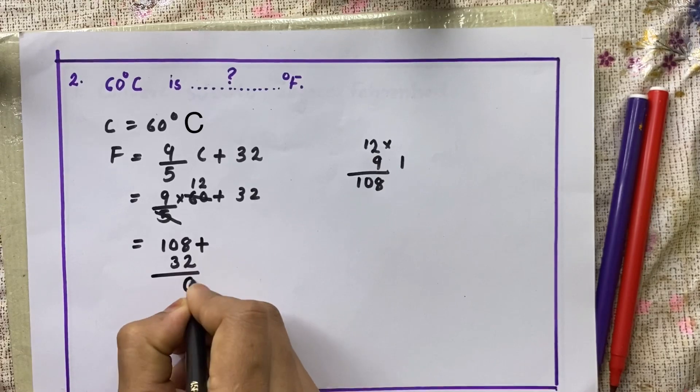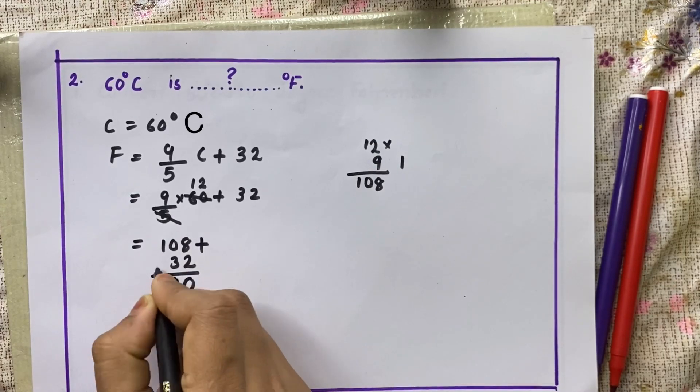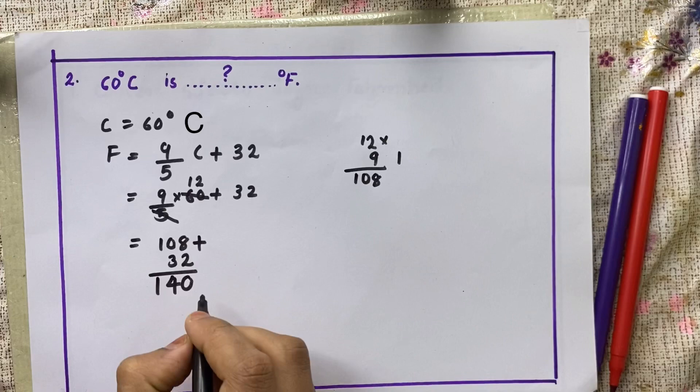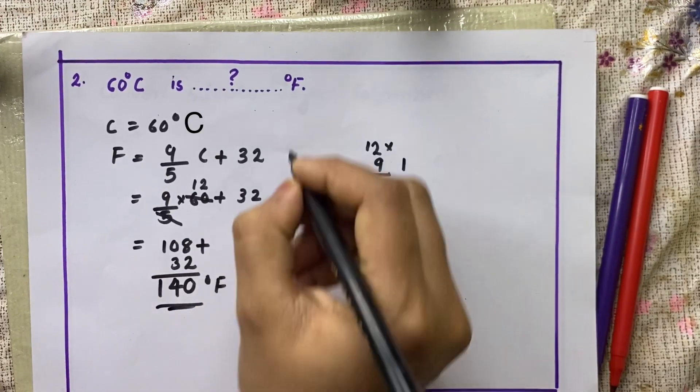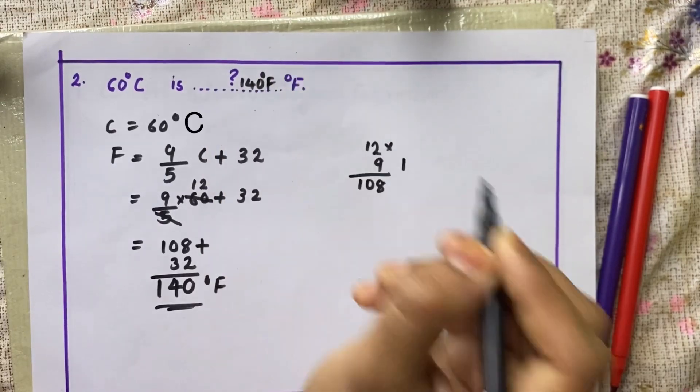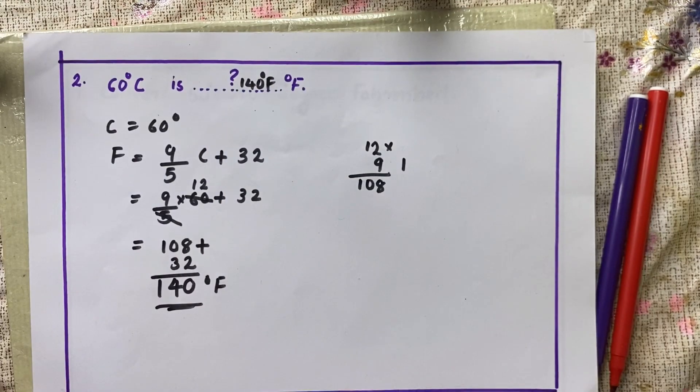8 plus 2 is 0, remaining 1, 4, 1. What is the answer then? We got the answer 140 degree Fahrenheit. 140 degree Fahrenheit. Easy right?